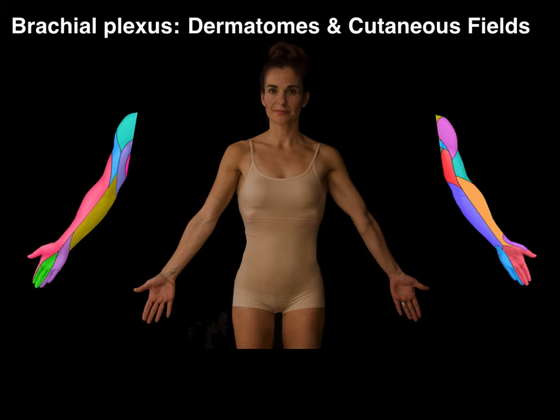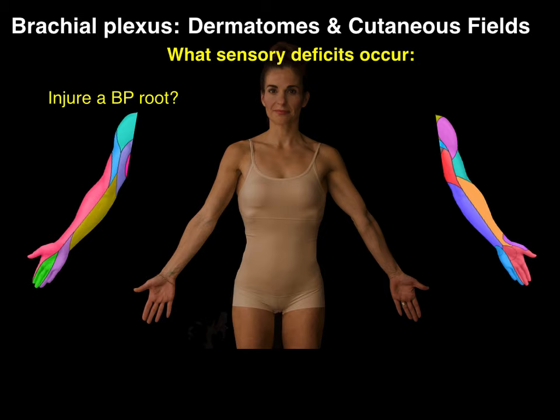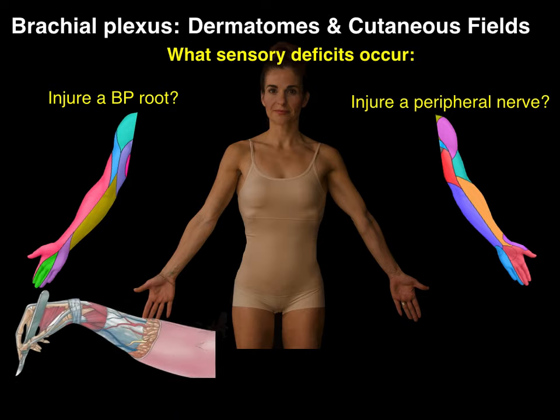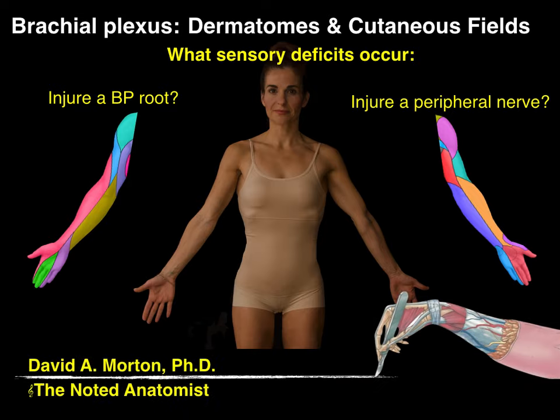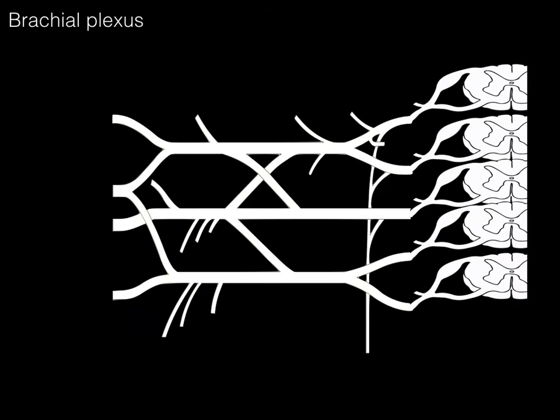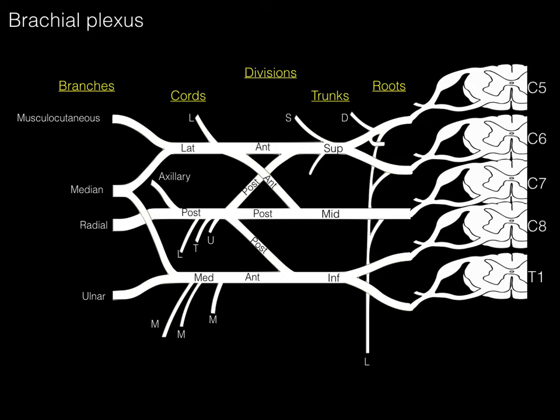Let's talk about dermatomes and cutaneous fields. We're going to answer the question: what sensory deficits occur when you injure a brachial plexus root, in contrast to injury in a peripheral nerve? My name is Dr. Morton, and I'm the noted anatomist. The brachial plexus is something you should be somewhat familiar with — you don't necessarily have to label every single thing, but you should be at least familiar with this brachial plexus image.